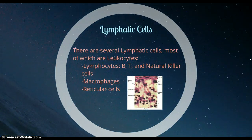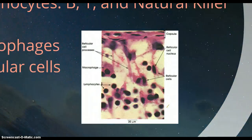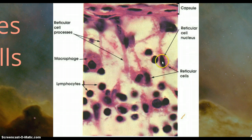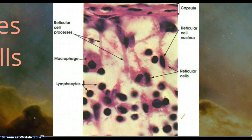There are lymphocytes — B, T, and natural killer cells — and then there are macrophages, and then there are reticular cells. If you don't remember what reticular cells are, you're probably going to have to go back to chapter 4. But let's take a look at this picture. This is actually an encapsulated lymphoid organ. As you can see, there are reticular cells right here, and these will secrete reticular fibers to create a little network of fibers. And right here is your macrophage, and right here are your lymphocytes.